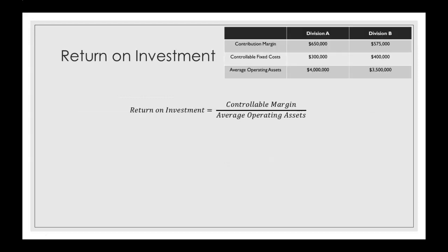Here's the equation we're going to use to find our ROI: it's our controllable margin divided by average operating assets. We were given average operating assets in the table, but we weren't given controllable margin. So what we can do is take our contribution margin and subtract out our controllable fixed costs to find our controllable margin.